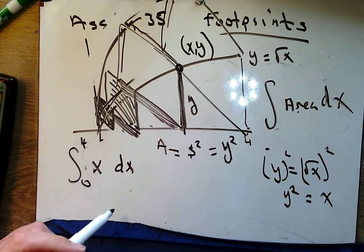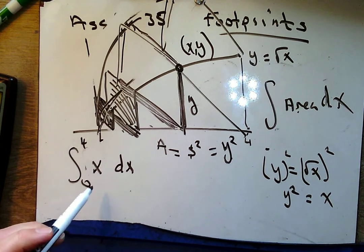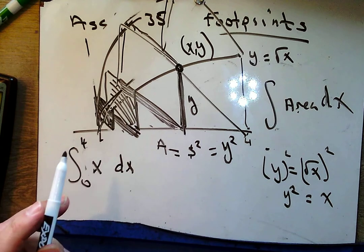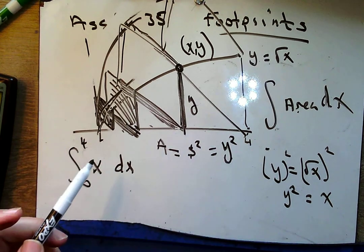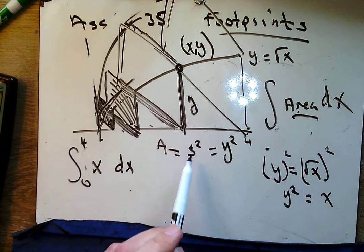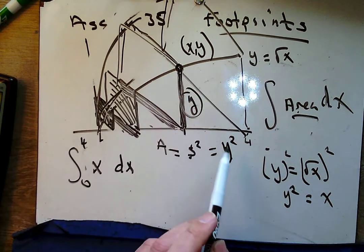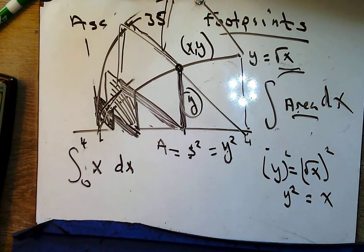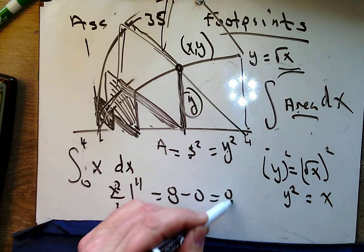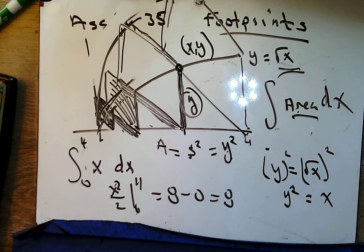In these problems, it is not going to be the integral that causes the huge amount of stress — at least not in this first couple of days. That's a really straightforward integral. We integrated the area, and area was side squared, and the side length is that y value. We get x squared over 2 from 0 to 4, which is 8 minus 0, or 8. The volume of this is 8 cubic units. You pick the units unless you're told otherwise.